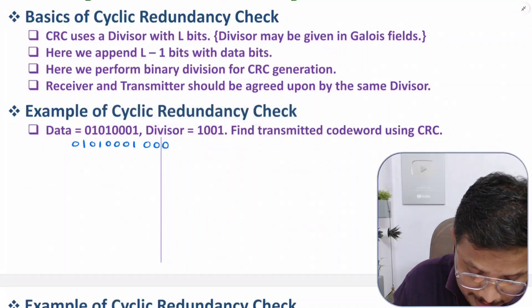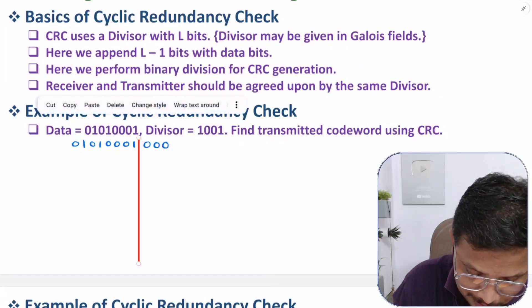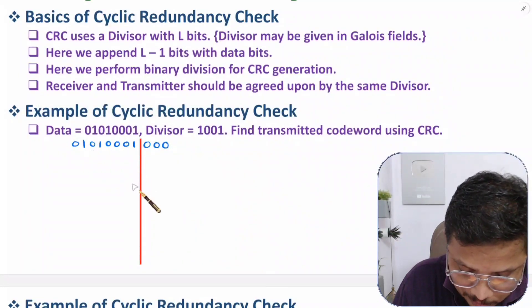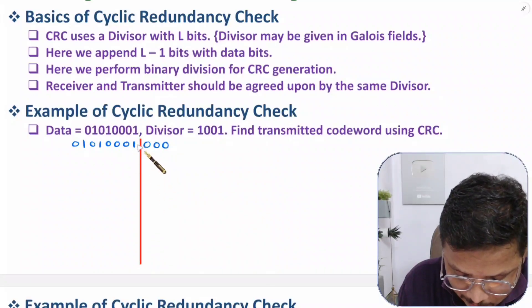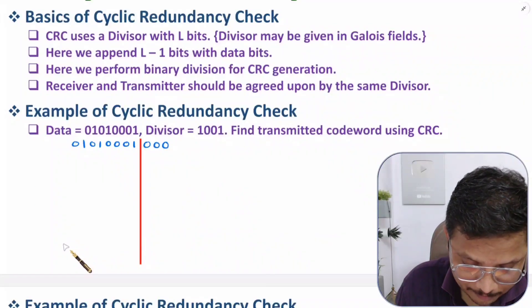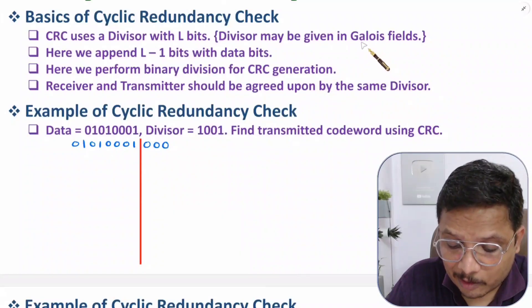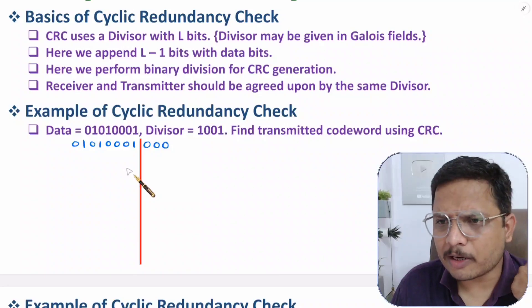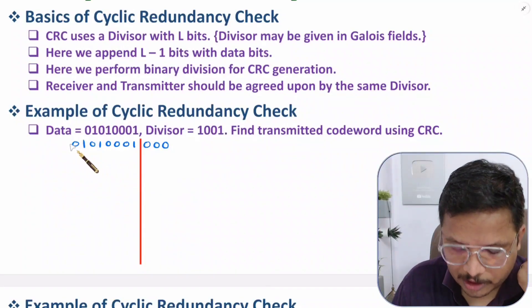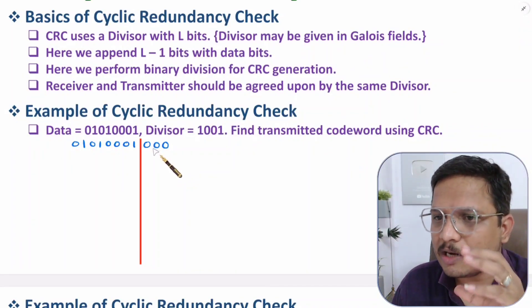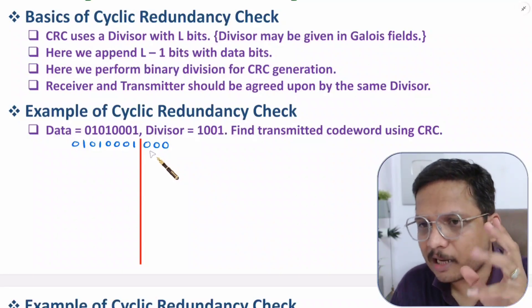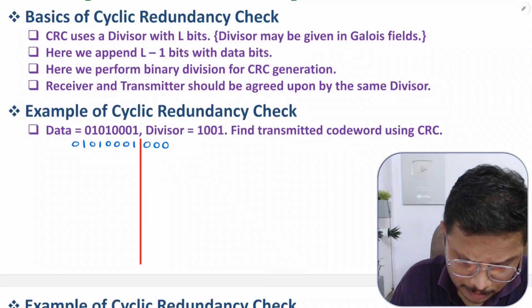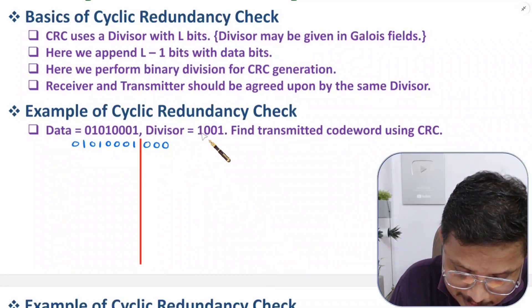Draw a line here as a precaution, because when you do the division you continue until all zeros appear on the left side. This division happens as per Galois field. We are not interested in the quotient — I will not write the quotient value. We only need to find the remainder.